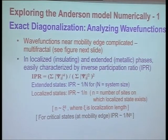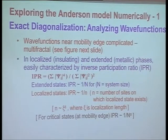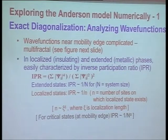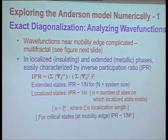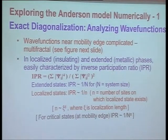There are two ways to explore the Anderson model numerically. One is to exactly diagonalize the Hamiltonian. One way to look at the nature of the eigenstate is the inverse participation ratio — for any given state, you look at its amplitude at site i to the fourth power, summed over all sites, divided by the normalization factor. If you have an extended state for a system of size N, this ratio is 1/N. On the other hand, if you have a localized state, you get 1 over the number of sites on which the localized state exists.